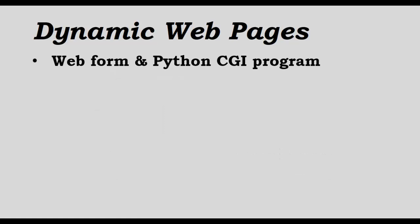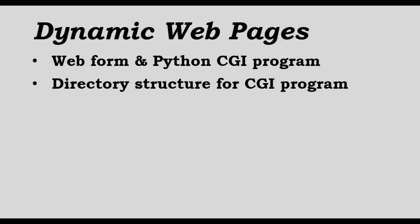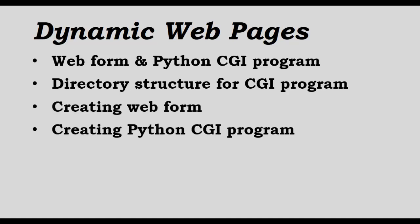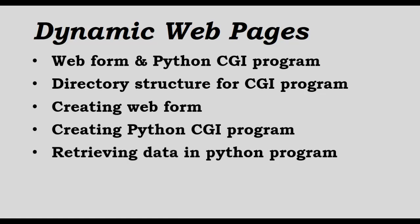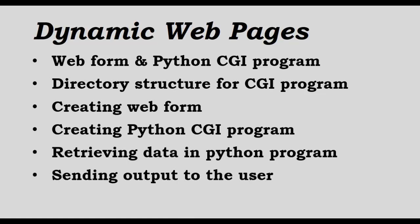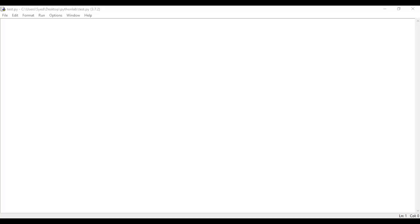We will also see practically how web forms are created and then write a Python CGI program. The Python program which runs on the web server has to be placed in a certain directory. We will create a web form and write a Python CGI program to retrieve data from the user through the web form, and finally the Python program will send the output to the user.